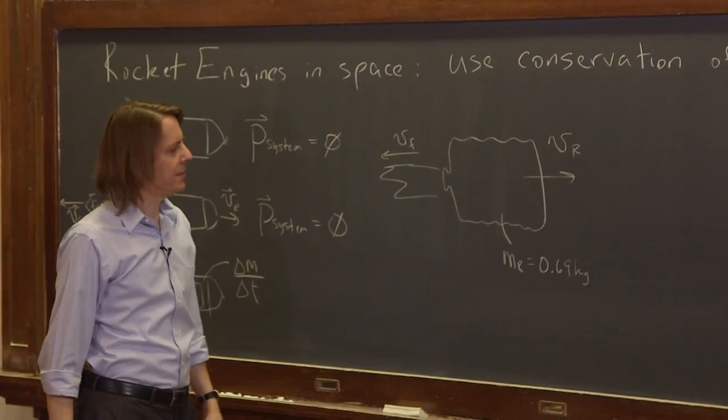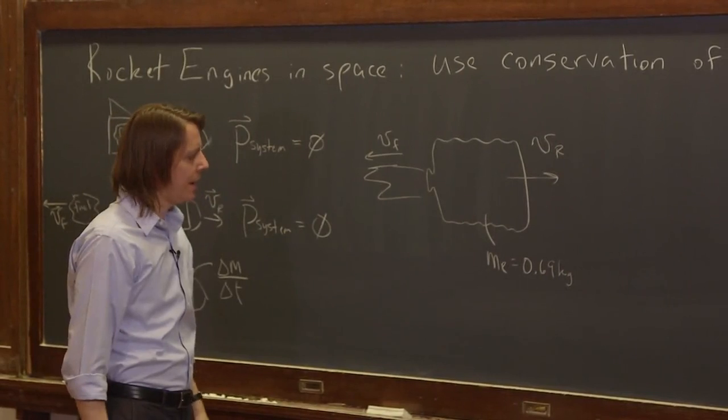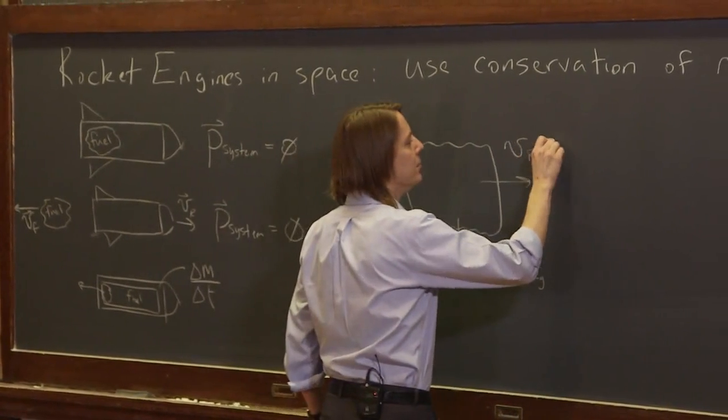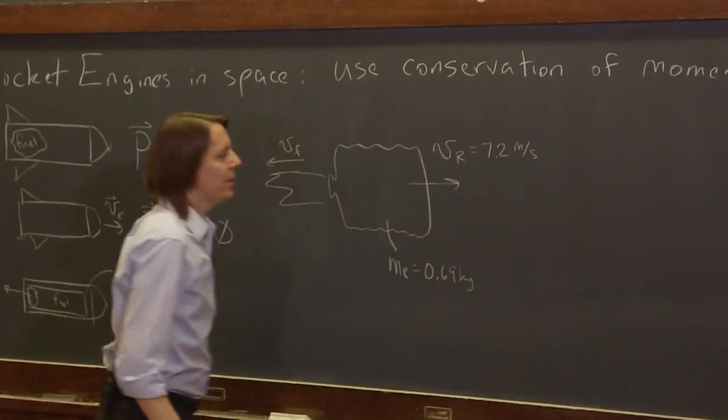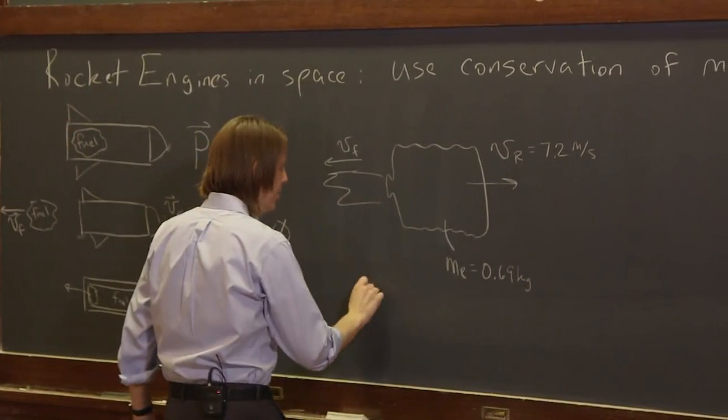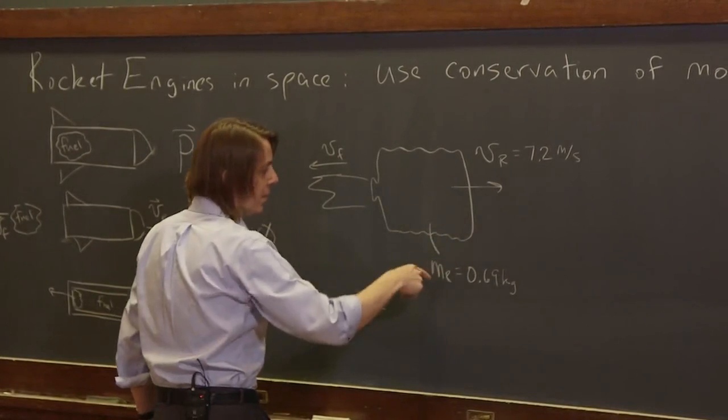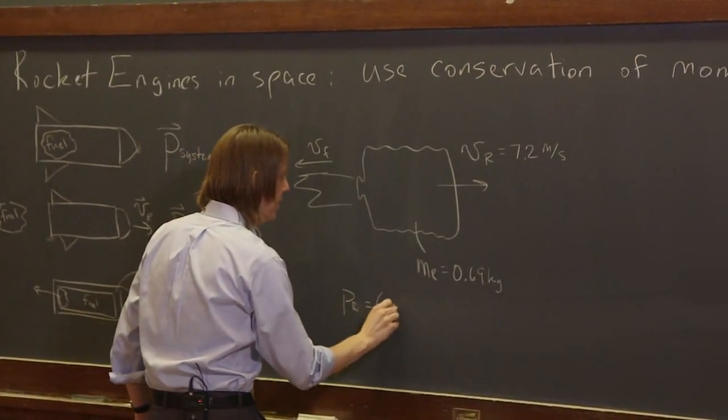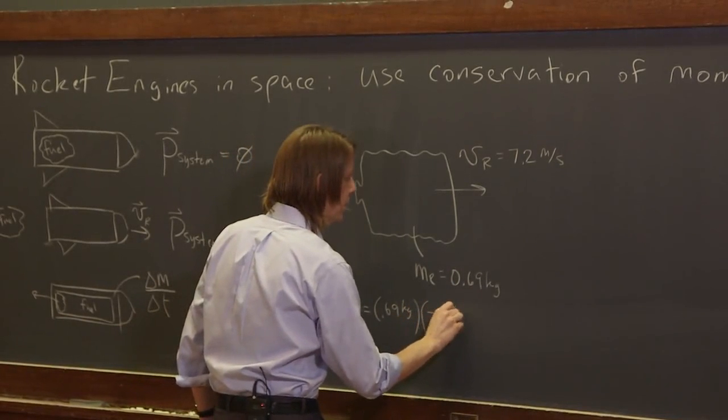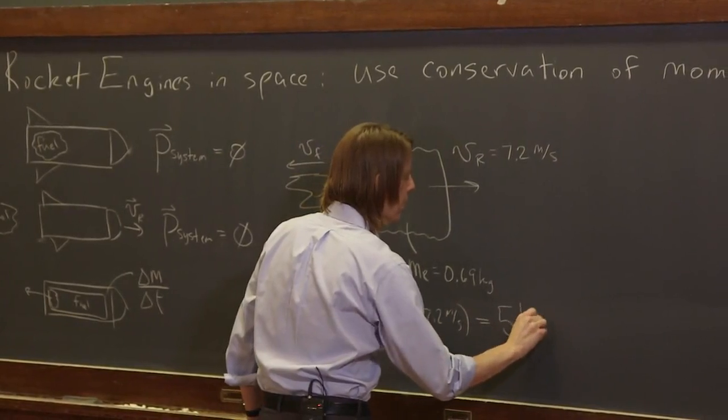We can calculate the change of momentum. We can calculate basically the impulse that these apply to each other. I analyzed the video and measured the V rocket to be about 7.2 meters per second. So we can get the final momentum of the rocket. It's just mass times velocity. It's 0.69 kilograms times 7.2 meters per second, which is about 5 kilogram meters per second.